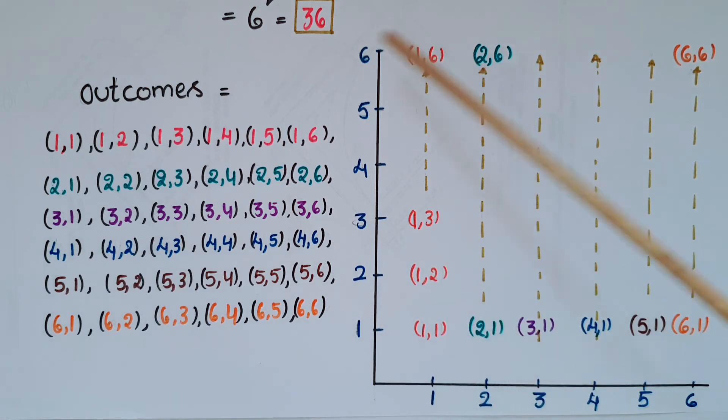Start with (1,1), (1,2) until (1,6). Then write here (2,1), (2,2) through (2,6).